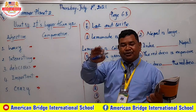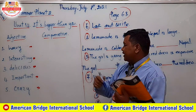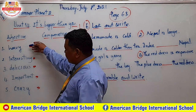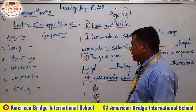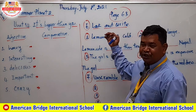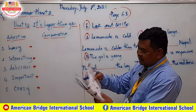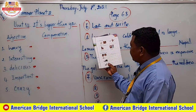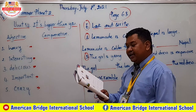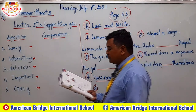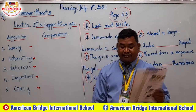Here we want to write the normal adjective and compare it to the comparative adjective. We have numbers one through five. To make the exercise clear, turn to page 63. On page 63 we have Part E and Part F — Part E is 'look and write,' and Part F is 'unscramble and write.'